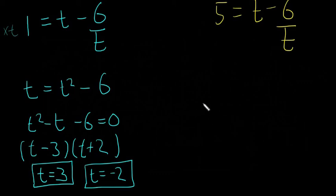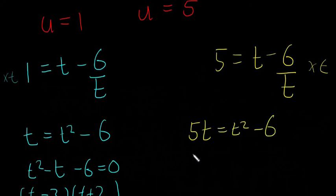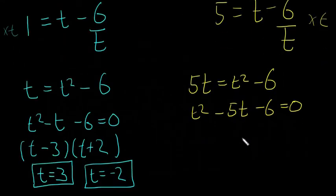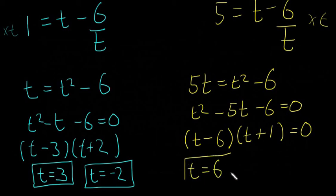Now for U equals 5: we have 5 equals t minus 6 over t. Multiplying by t gives 5t equals t squared minus 6, so t squared minus 5t minus 6 equals 0. Factorising with minus 6 and plus 1 — since minus 6 times plus 1 is minus 6, and minus 6 plus 1 is minus 5 — gives (t minus 6)(t plus 1) equals 0, so t equals 6 or t equals minus 1.